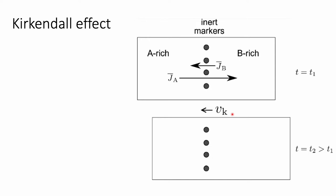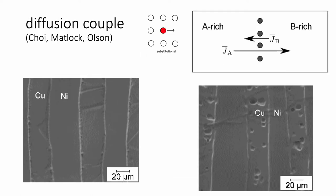We now know that the mechanism of diffusion in the solid state involves vacancy movement. If there is a net transport of mass in one direction, there is a net transport of vacancies in the other direction. Those vacancies represent an excess concentration and will tend to condense into pores. This slide illustrates the vacancies that form due to net mass transport: because diffusion happens by a vacancy mechanism, an excess of vacancies on one side condenses as porosity.